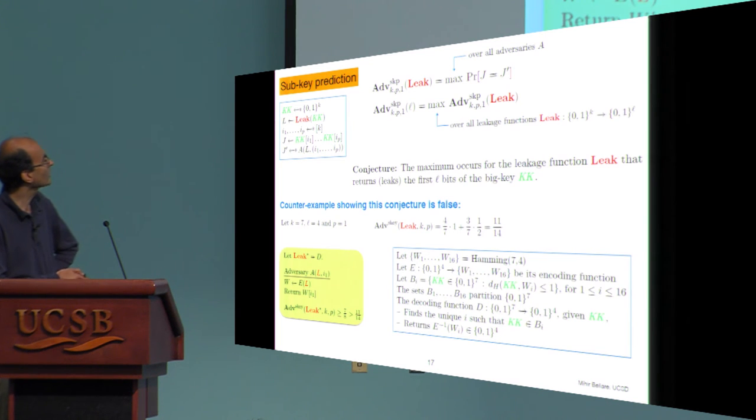And this kind of leads into how you figure out what the bound actually is. And it makes a connection with hamming balls and error correcting codes to show this. And what happens is that if you look at this example where the key length is seven and you're leaking four bits, and imagine there's only one probe, you can easily figure out what the advantage for this strategy is. And it turns out to be 11-14s. Now consider the alternative strategy, which takes the 7-4 hamming code, which has 16 code words, all of them of length 7. And gives you an encoding and decoding function. And the leakage that is going to be provided is to take the key and decode it.